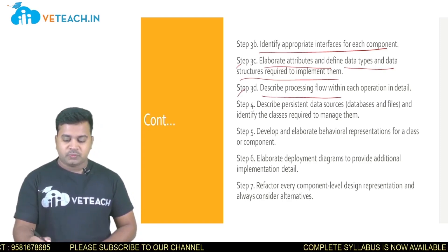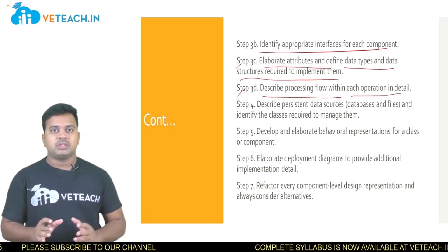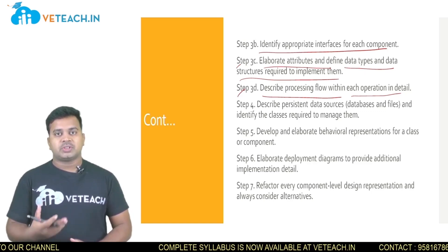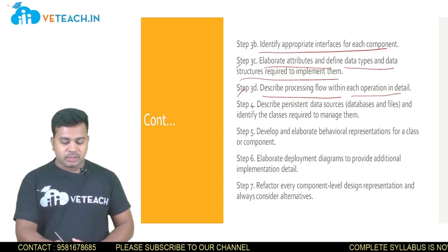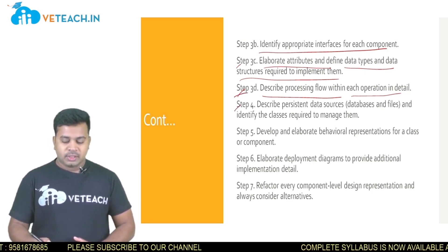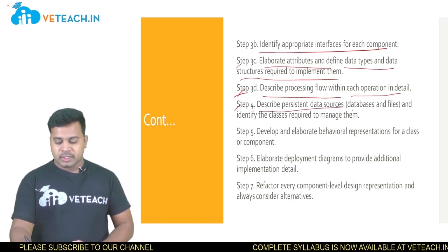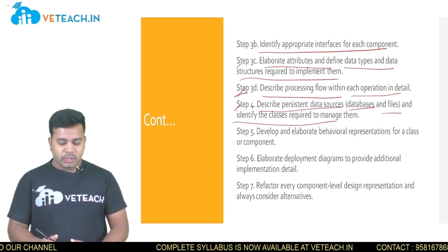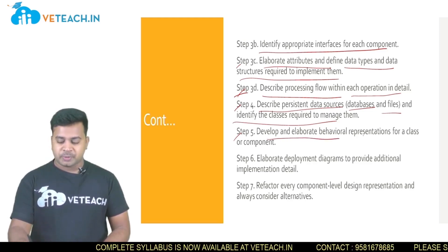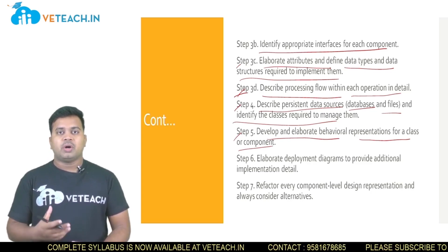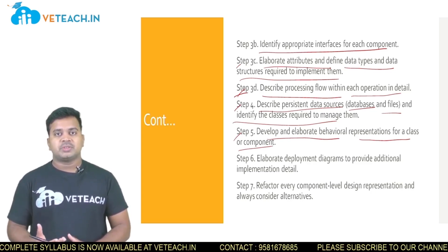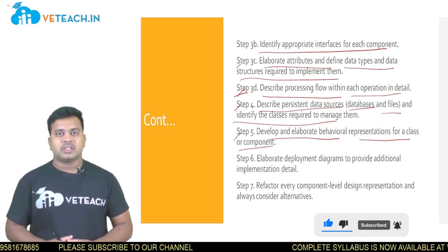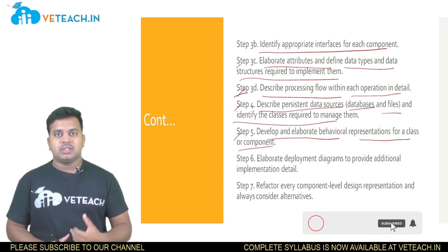Next, describe the processing flow within each operation in detail — how data is forwarded through the steps and what processing steps are required. After that, describe persistent data sources like databases and files, and identify the classes required to manage them. Then, develop and elaborate behavioral representations for a class or component. Behavioral diagrams such as sequence diagrams are best suited for representing these behavioral aspects.